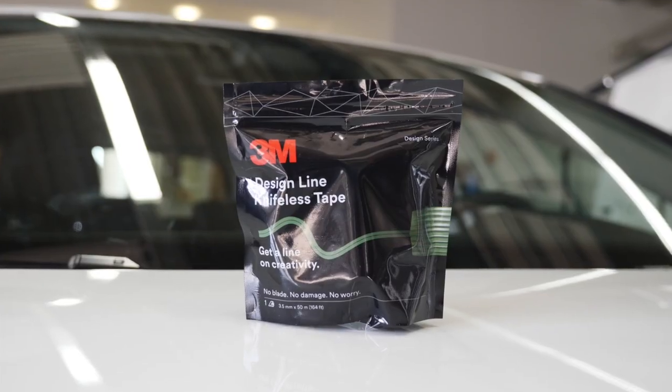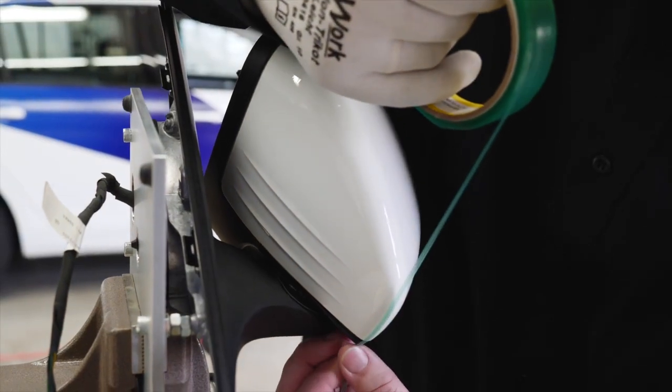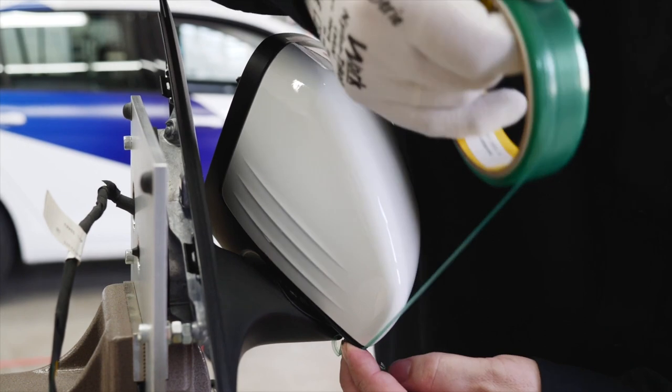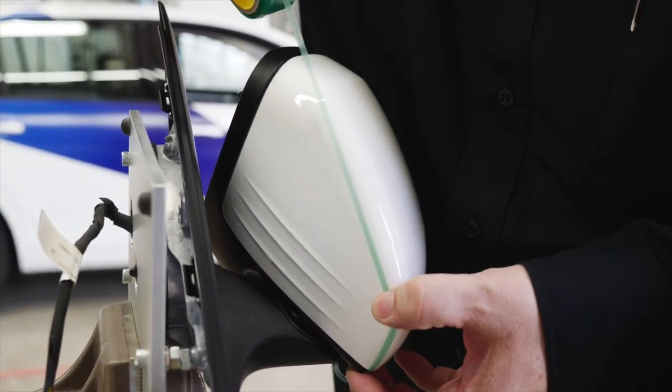After cleaning the mirror, use 3M Knifeless Tape Design Line to set the cut line for the first piece of film that is applied on the vertical undercut part of the mirror. Secure the knifeless tape to ensure good adhesion to the substrate.